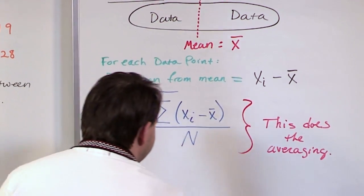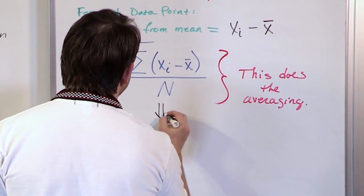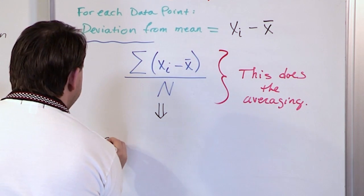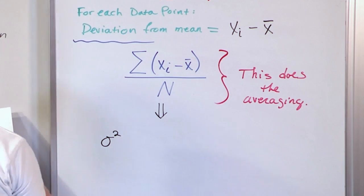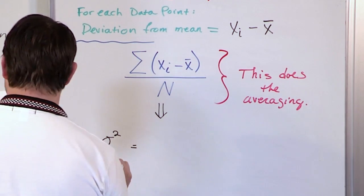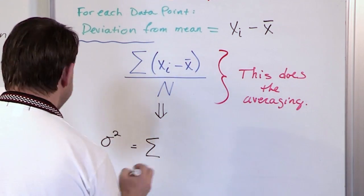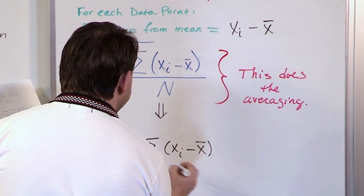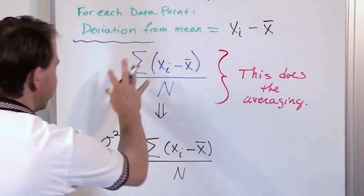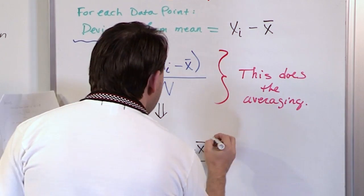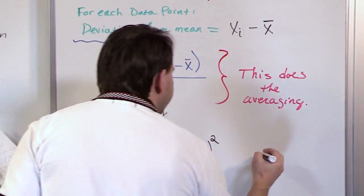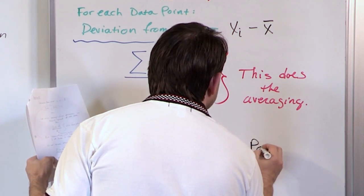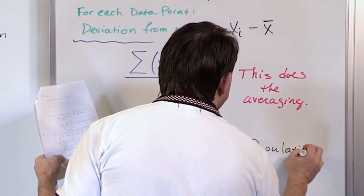To fix this, we make one small modification: we square the deviation term. So the variance is the sum of (X sub i minus the mean) squared, divided by N. We call this the population variance. The squaring action makes all the negative values positive, so we completely sidestep the problem of having half negative and half positive values that cancel to zero.